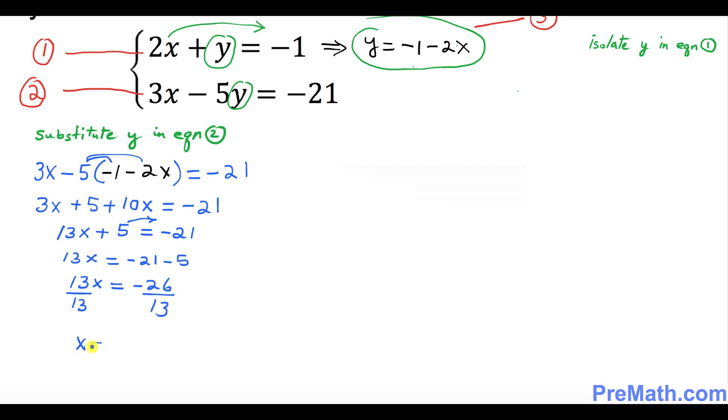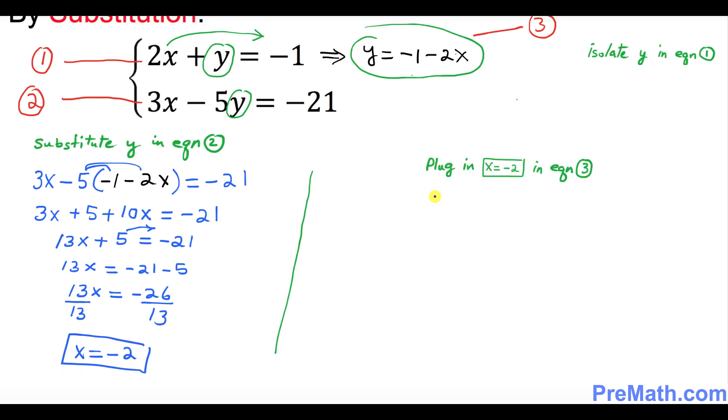x turns out to be negative 2. That is our x value. In the next step we're going to plug x equals negative 2 into our equation number 3.